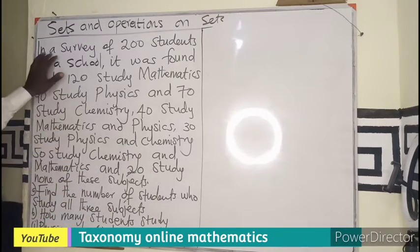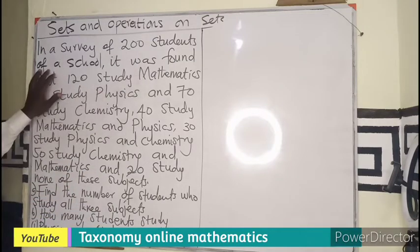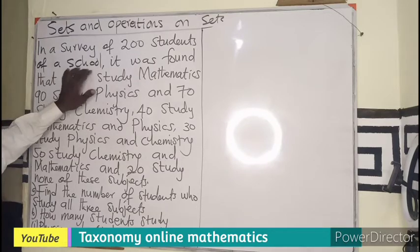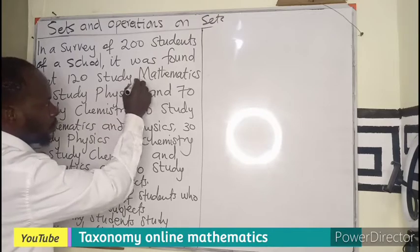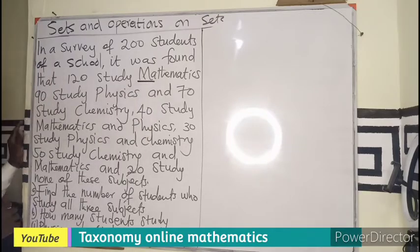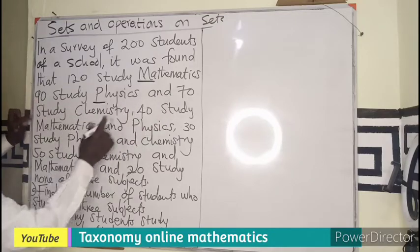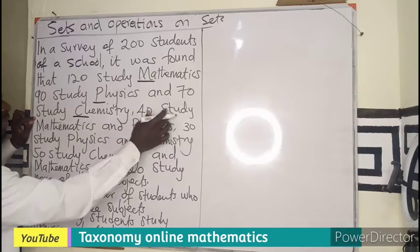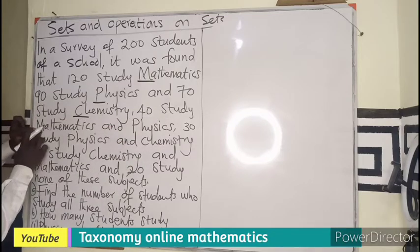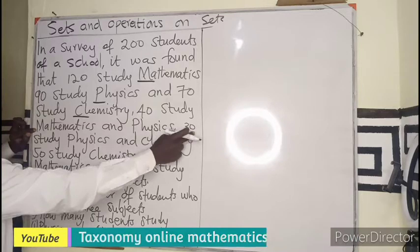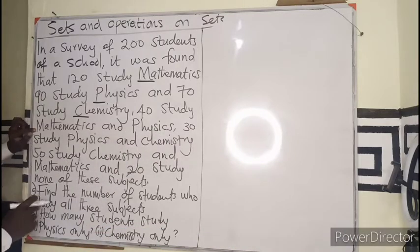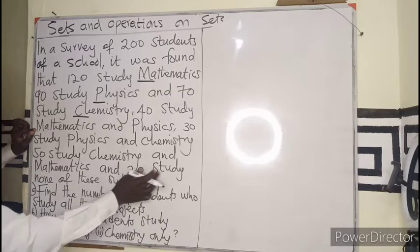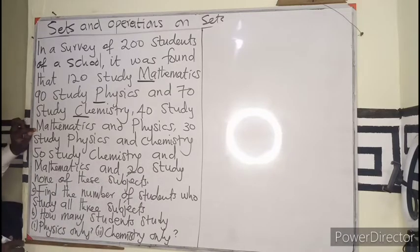In a survey of 200 students of a school, it was found out that 120 study Mathematics, 90 study Physics, and 70 study Chemistry. 40 study Mathematics and Physics, which is the intersection. 30 study Physics and Chemistry. 50 study Chemistry and Mathematics. Then 20 study none of the three sets.